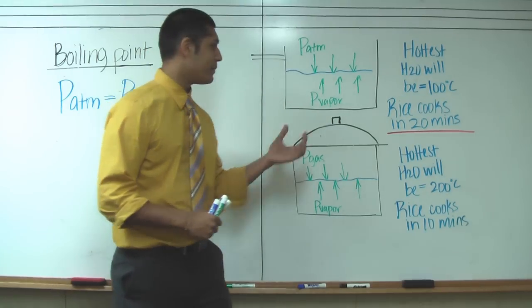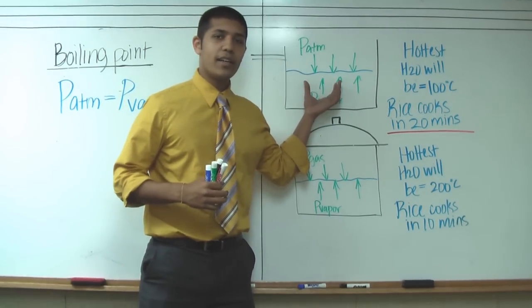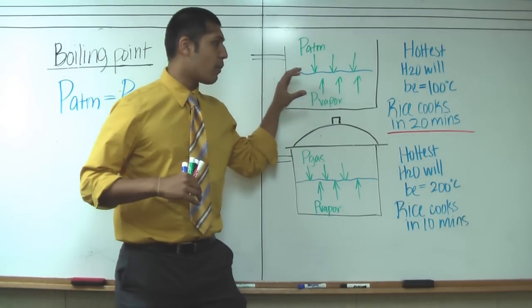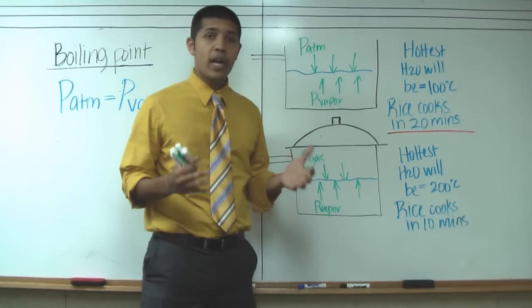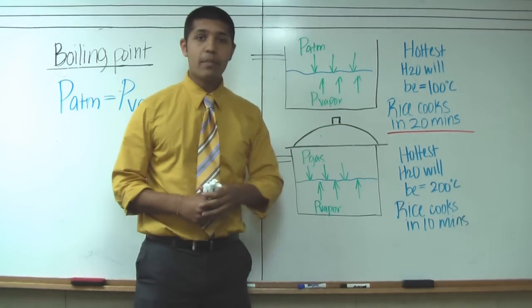So this is actually what's happening. In a normal pot of water, the hottest temperature that the water can achieve is 100 degrees Celsius. That's because there's a finite amount of pressure that we can have due to the atmosphere.